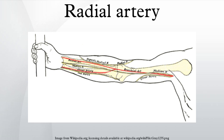At the wrist: the dorsal carpal branch of the radial artery is a small vessel which arises beneath the extensor tendons of the thumb. The first dorsal metacarpal artery arises just before the radial artery passes between the two heads of the first dorsal interosseous muscle, and divides almost immediately into two branches which supply the adjacent sides of the thumb and index finger. The lateral side of the thumb receives a branch directly from the radial artery.